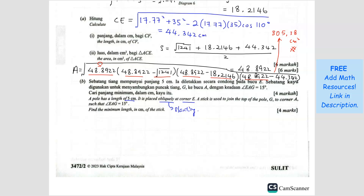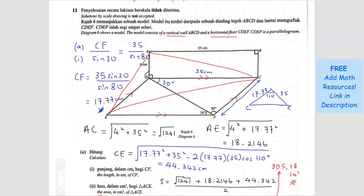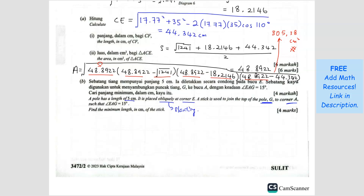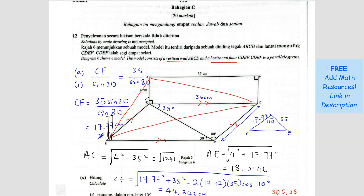A stick is used to join the top of pole G to corner A. So that means the pole is going to be from G — the top of the pole. So the pole is like this, this point here is point G. You got a pole here and the top of the pole is point G. They want to connect a stick from G to A. So this is the pole and this is the stick.